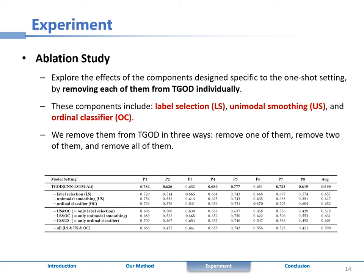As shown in the table, after removing one of them from TGOD, the performance decreases a lot. This indicates that all of the three components are important to TGOD.